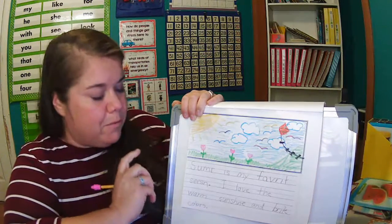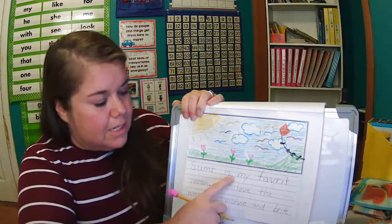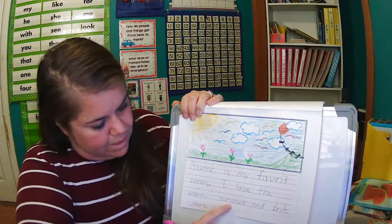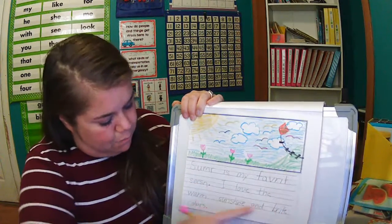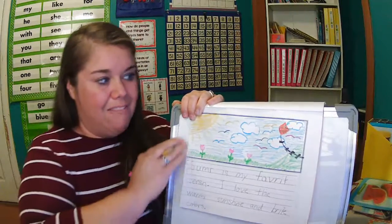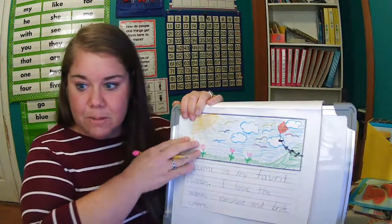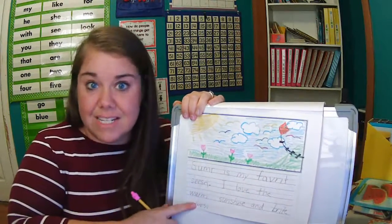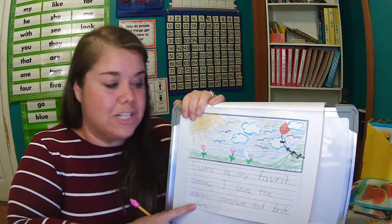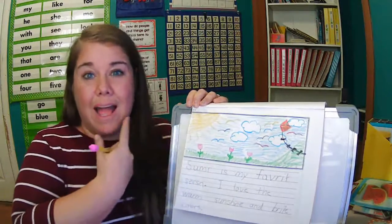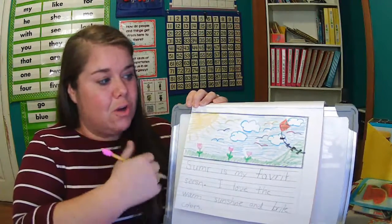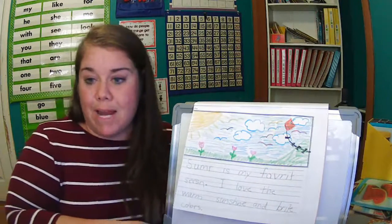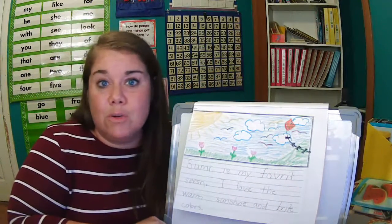So two sentences there. Let me read it again. Summer is my favorite season. I love the warm sunshine and bright colors. I've got details in my picture. I have details in my sentence. Even adding a second sentence on to give more information. I think that you can see what I'm trying to show you based on the details in my picture and the details in my writing. So boys and girls, now it's your turn.